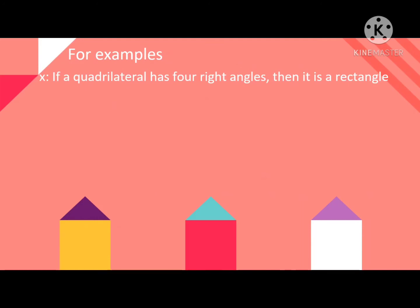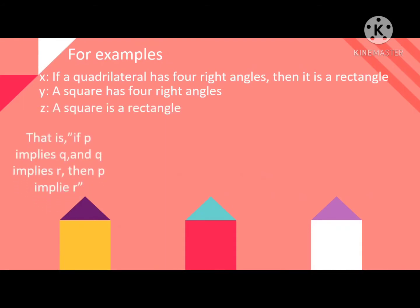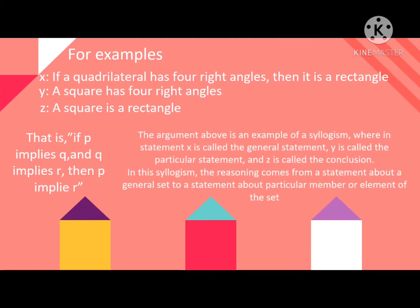Let us have an example. If a quadrilateral has four right angles, then it is a rectangle. A square has four right angles, therefore a square is a rectangle. That is, P implies Q and Q implies R, then P implies R. This argument is an example of a syllogism, wherein statement X is called the general statement, Y is called a particular statement, and Z is called the conclusion. In this syllogism, the reasoning comes from a statement about a general set to a statement about a particular member or element of the set.